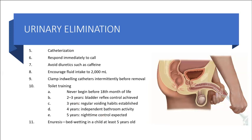Enuresis is bedwetting in a child at least five years of age. These children usually have small bladder capacity. It is more common in males and occurs in children who tend to be very deep sleepers.